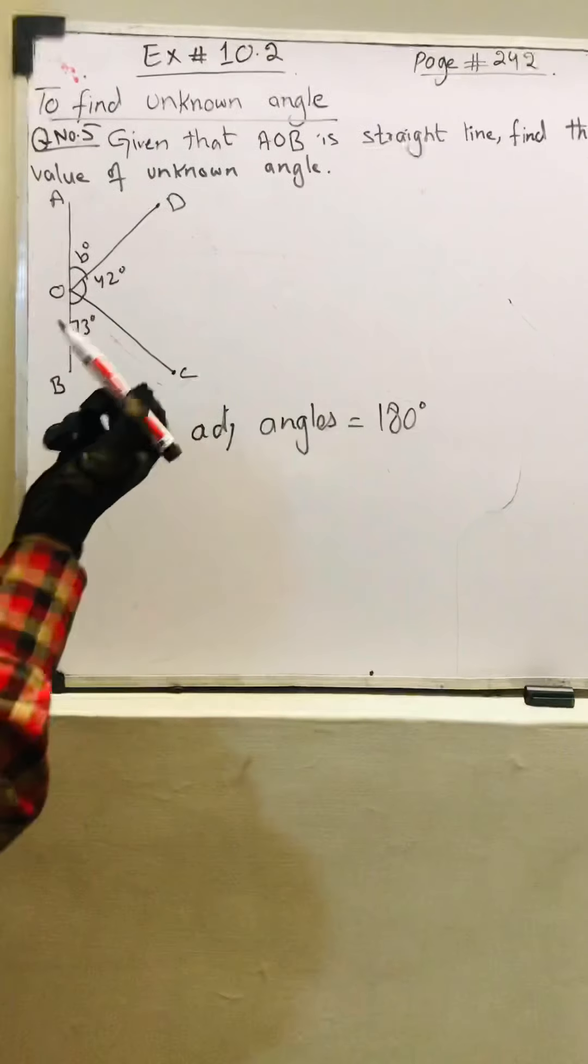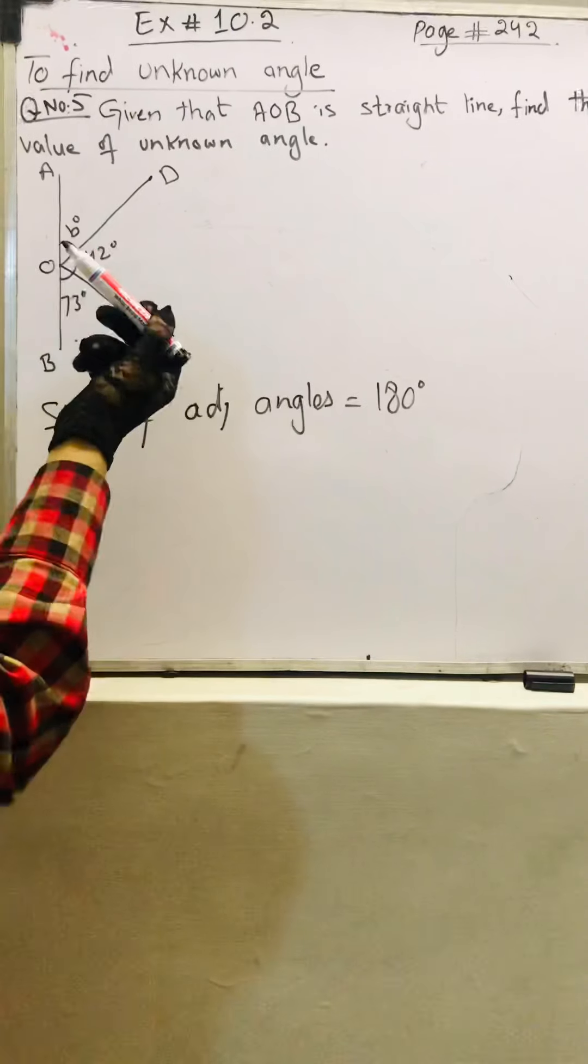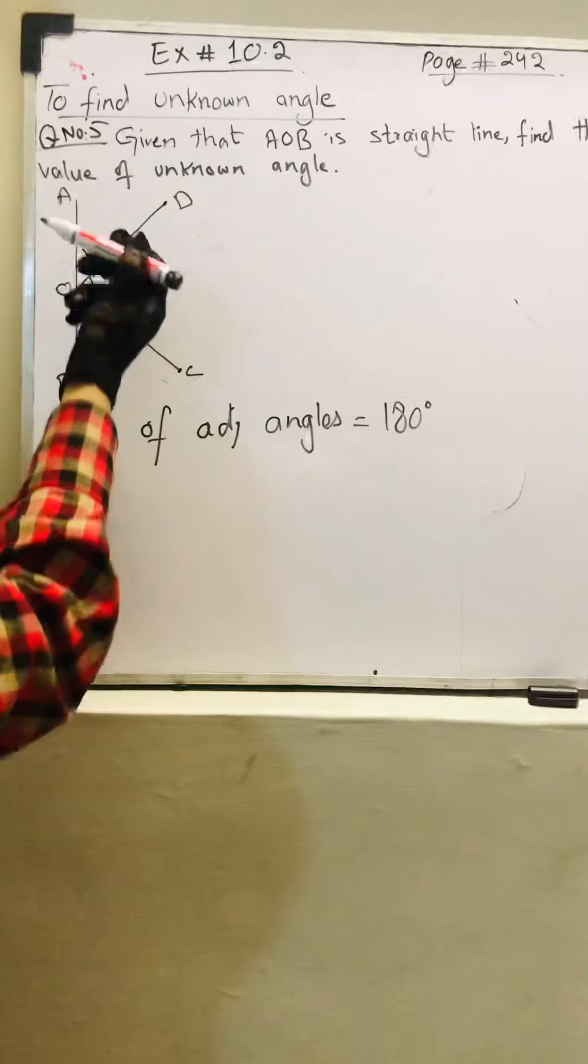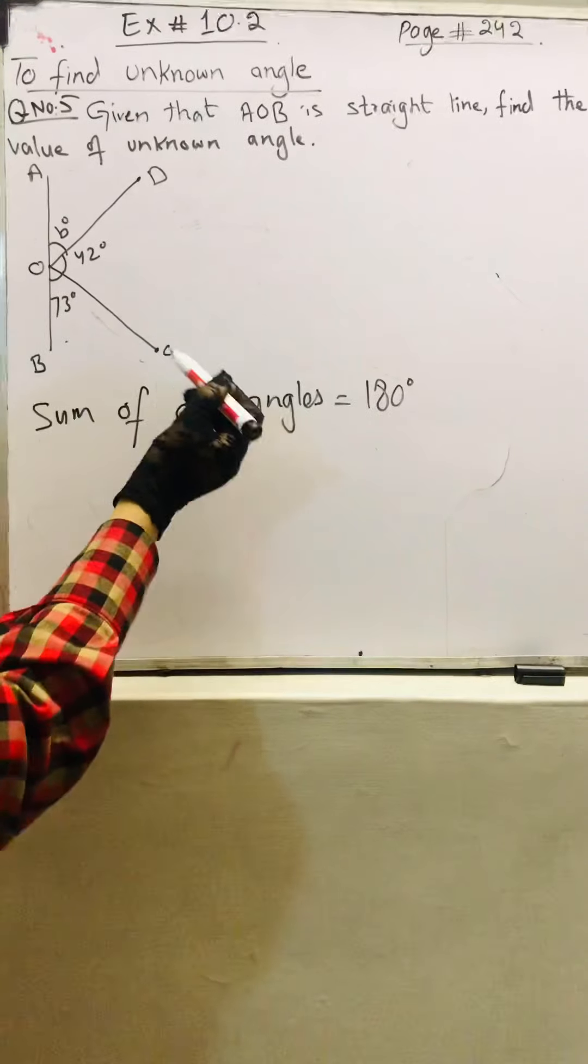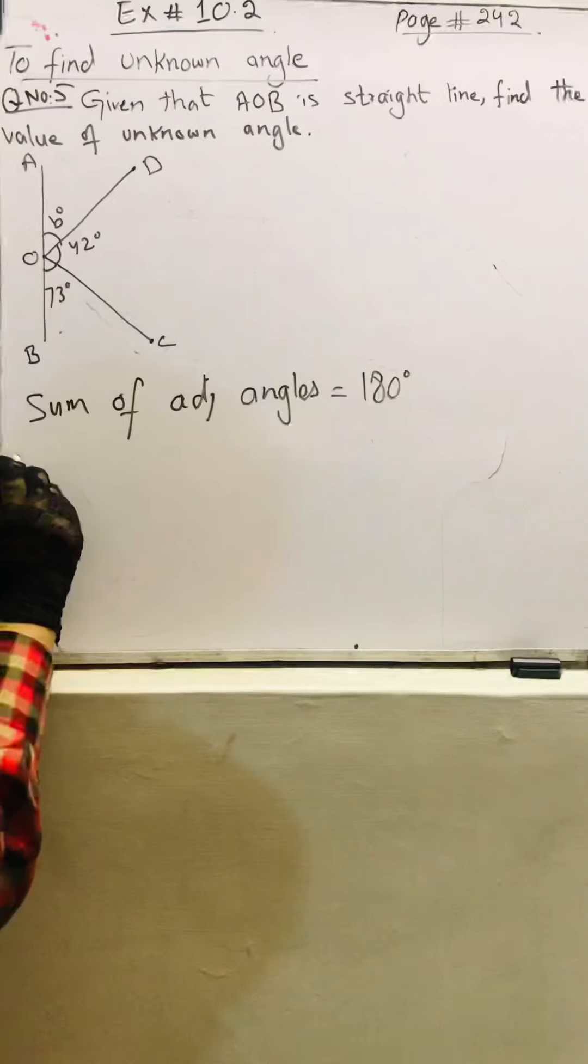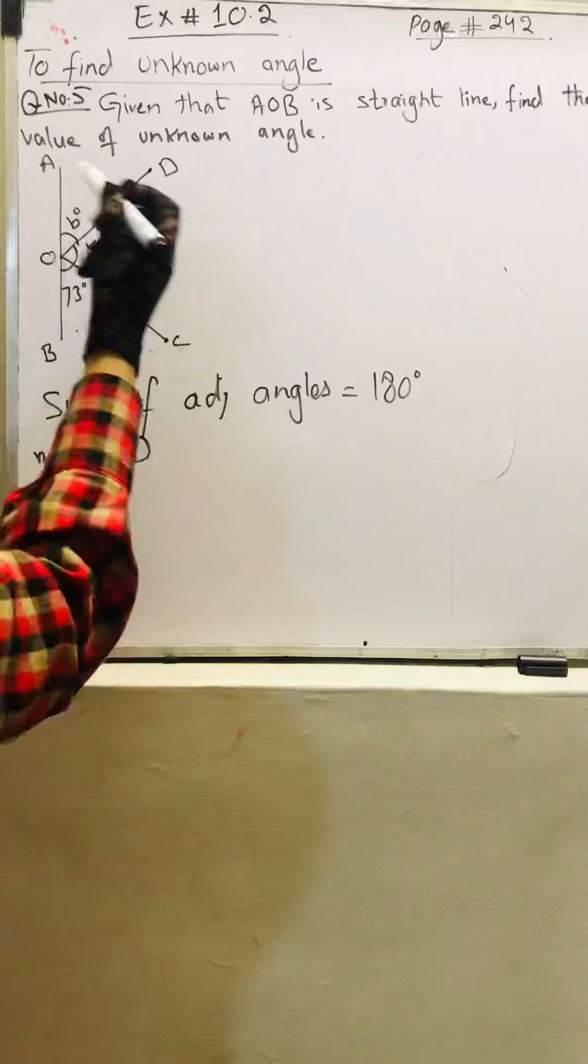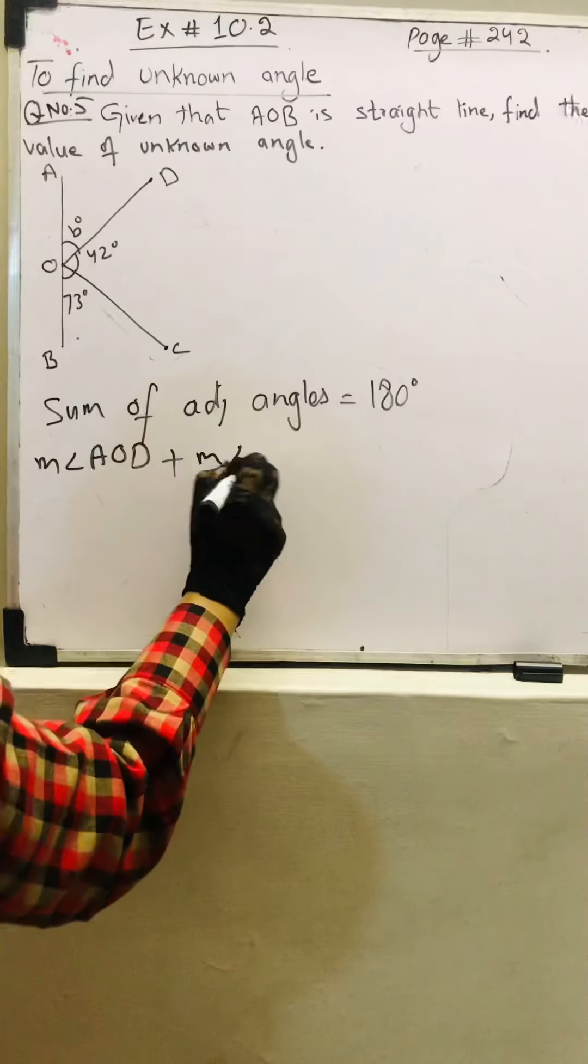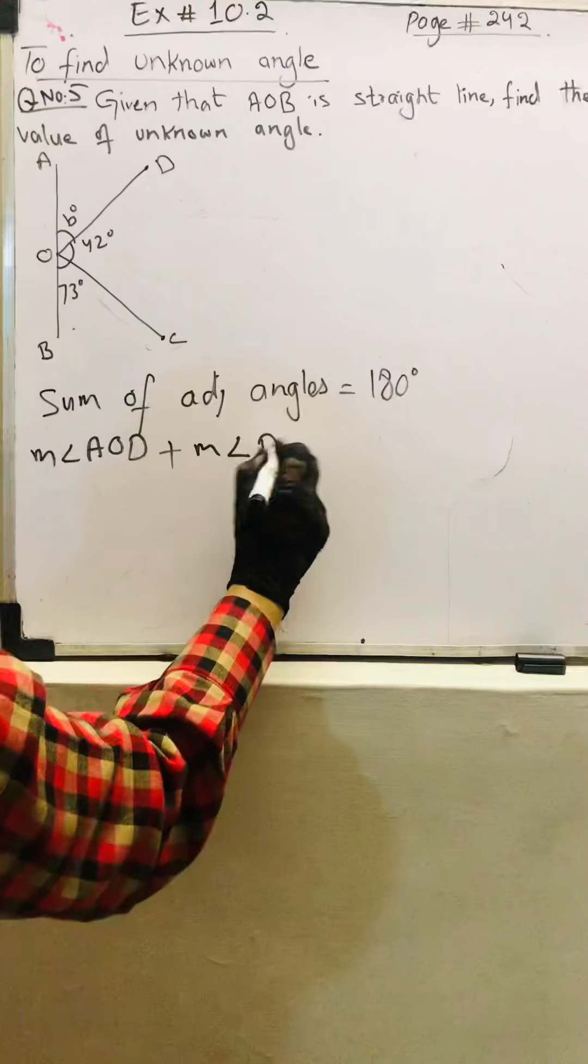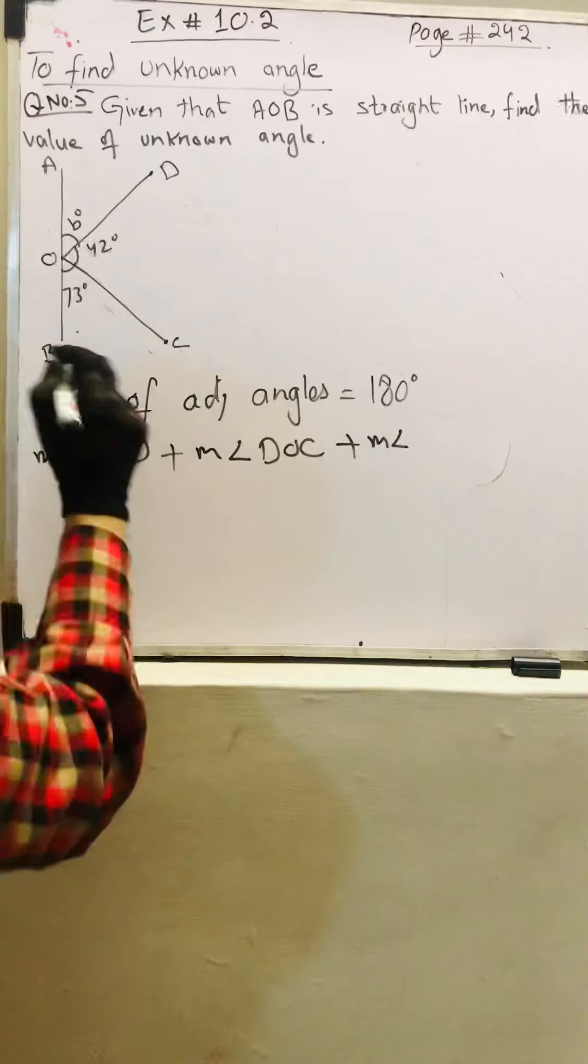Students, you can also write either angle AOD or DOA, both are the same. So measurement angle AOD plus measurement angle DOC plus measurement angle COB is equal to 180 degrees. It depends on you whether you write DOC or COD, COB or BOC. These are equal to 180 degrees.